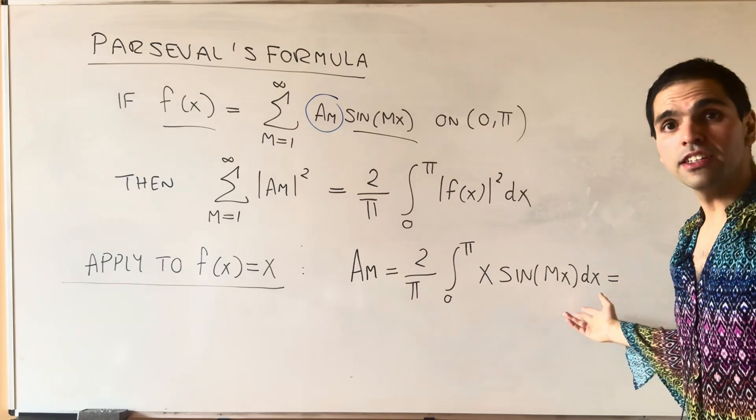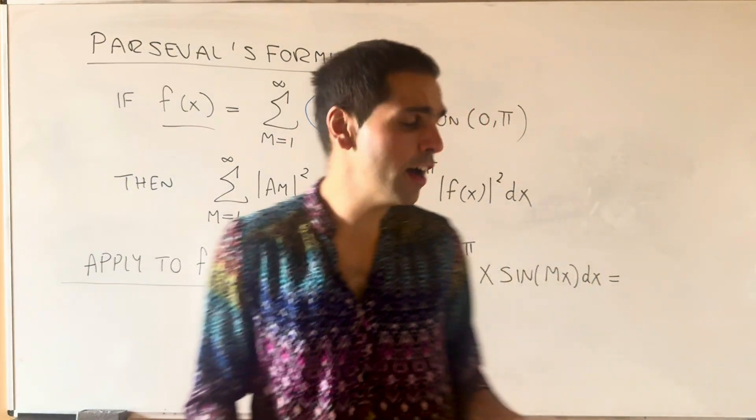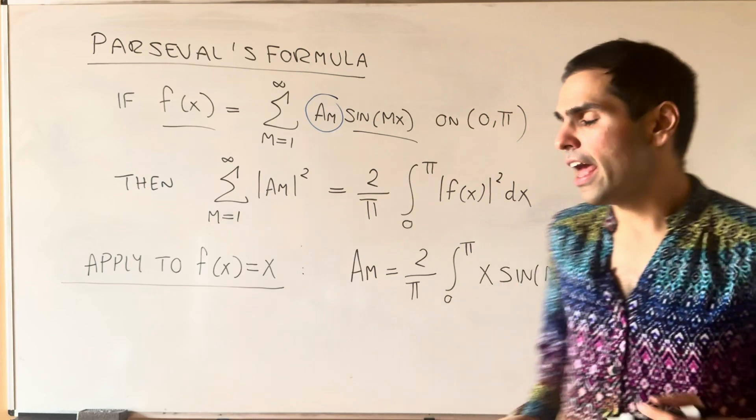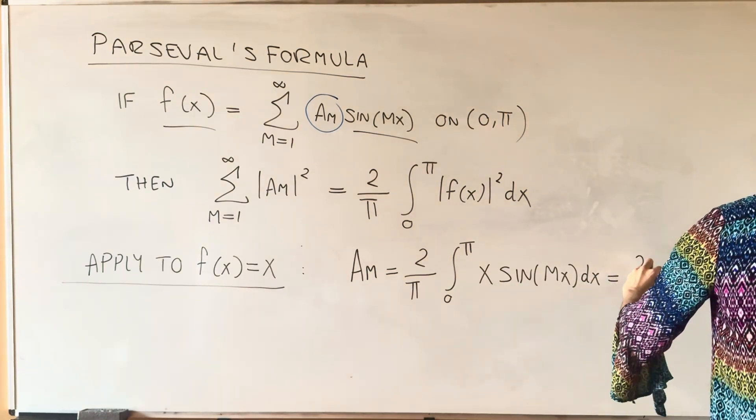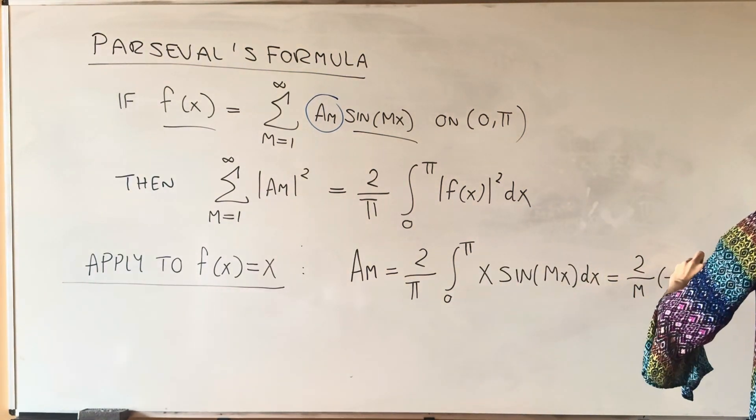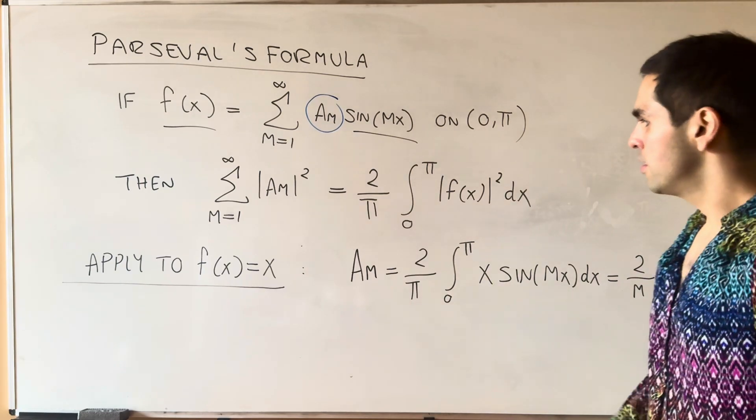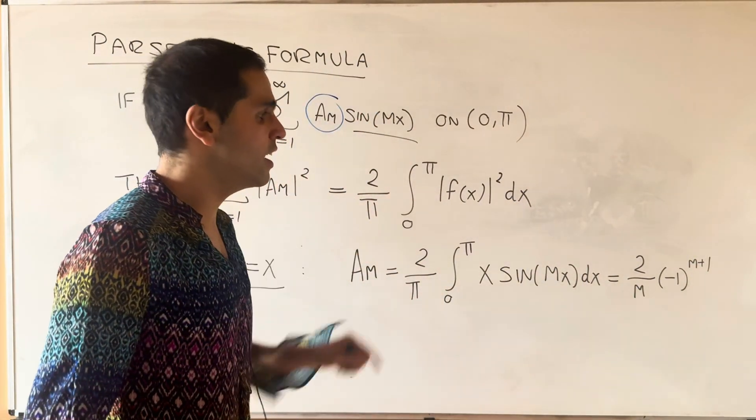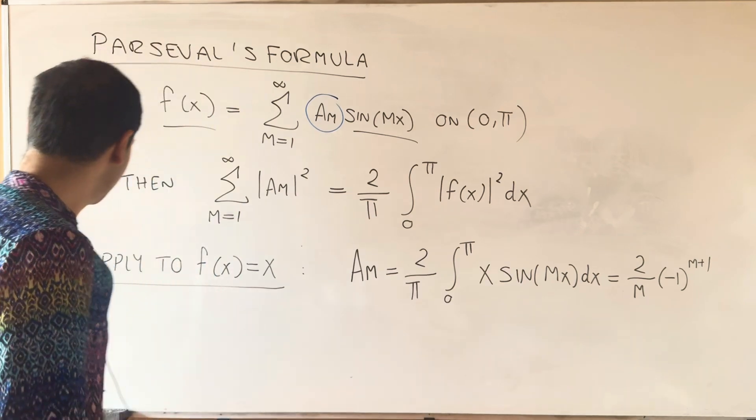And in a previous video, we already derived this formula, and we found that am is just 2 over m times (-1) to the m plus 1. And so using this, let's just evaluate the left-hand side and the right-hand side and see what we get.